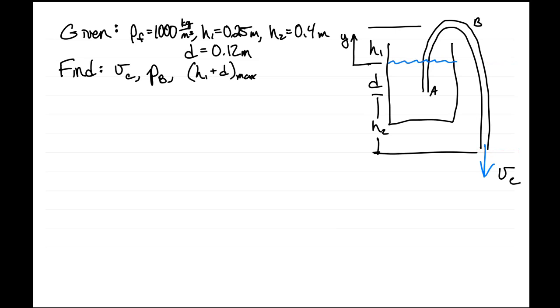So the first thing we want to do is figure out what the velocity is in the siphon, then we want to figure out what the pressure is at the top of the siphon, and then we want to figure out what the maximum distance is from point A to point B to get fluid to flow. To start out, this is going to be a problem dealing with Bernoulli's equation.